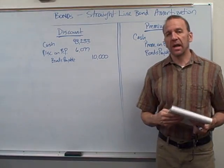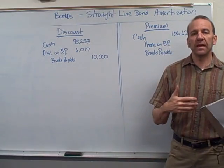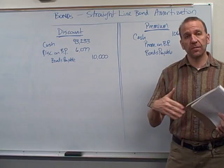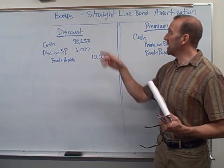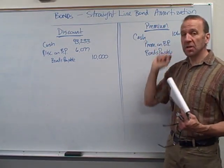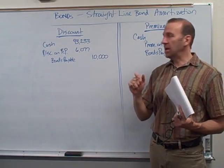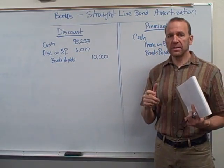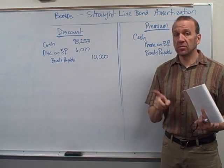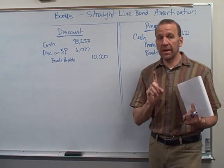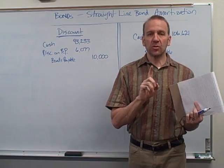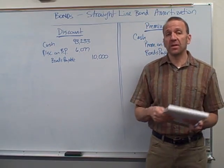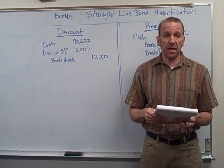Okay class, we're going to be looking at bonds. I have a video already that talks about different types of bonds and the characteristics of bonds, so you may want to view that. Now we're going to be looking at the straight line amortization of the bonds — the discount and the premiums on bonds and how we amortize those using the straight line method. You've got to be very careful here because the straight line method is used sometimes, but a very popular method is also the effective interest method.